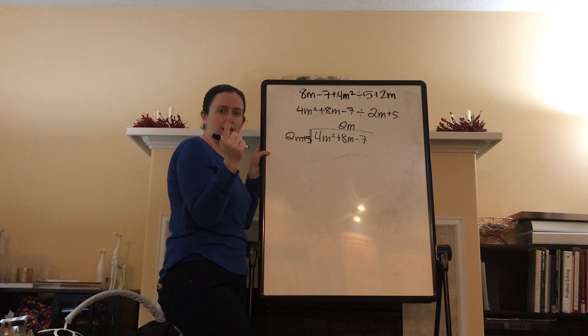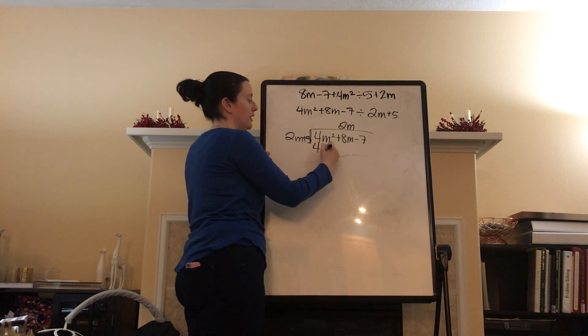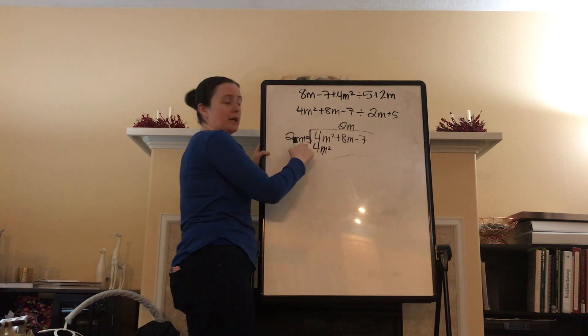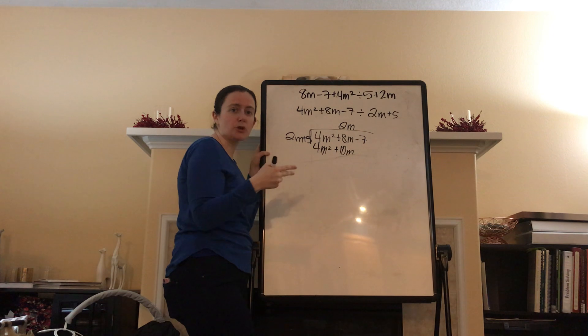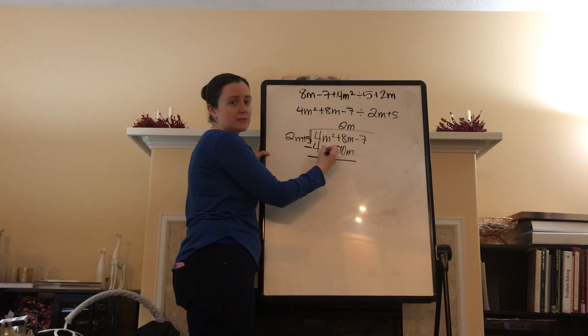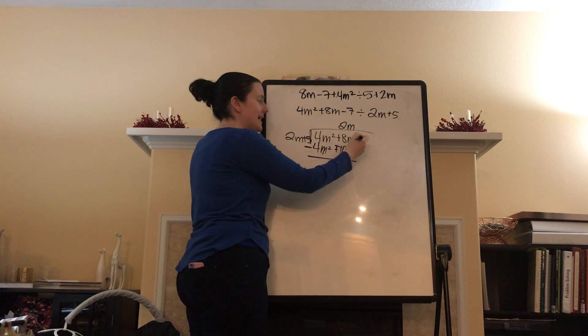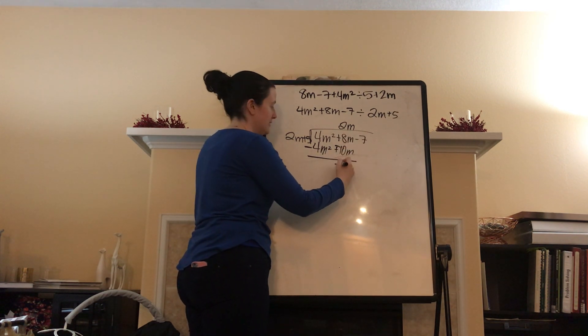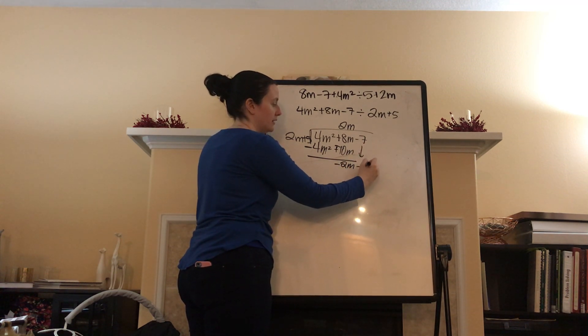Divide. Check. Multiply. Time to multiply. 2m times 2m. 4m squared. 2m times 5. 10m. Subtract. Subtract. 4m squared minus 4m squared. No m squared. It's always promising. 8m minus 10m is negative 2m. Bring down the minus 7.